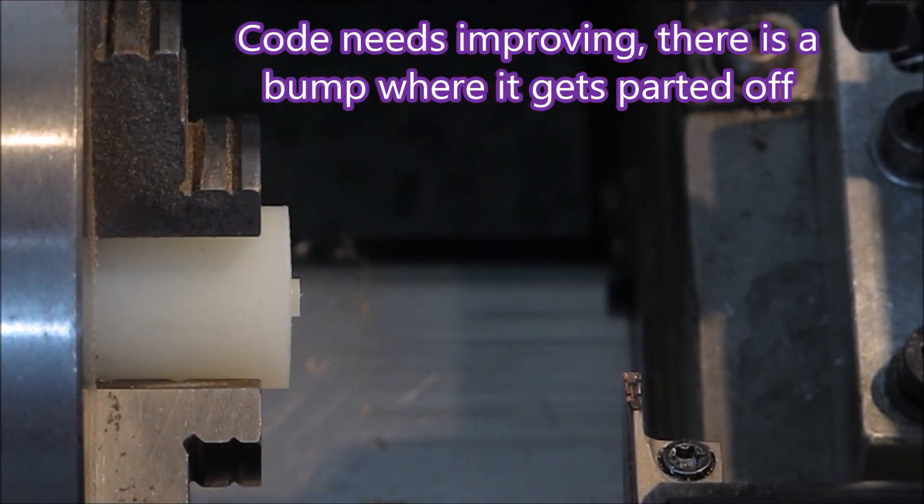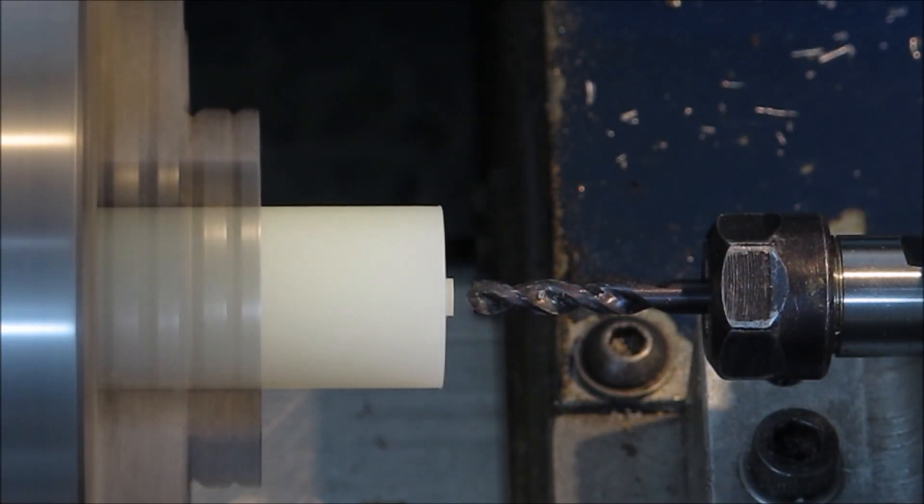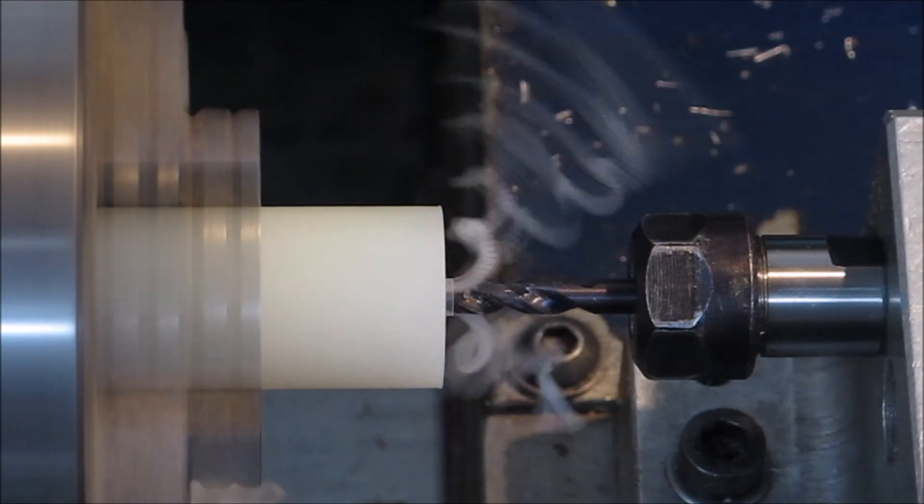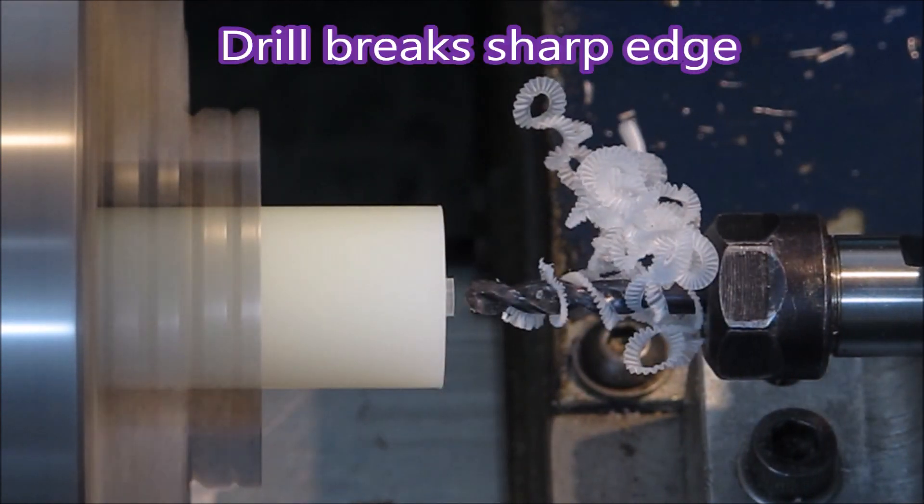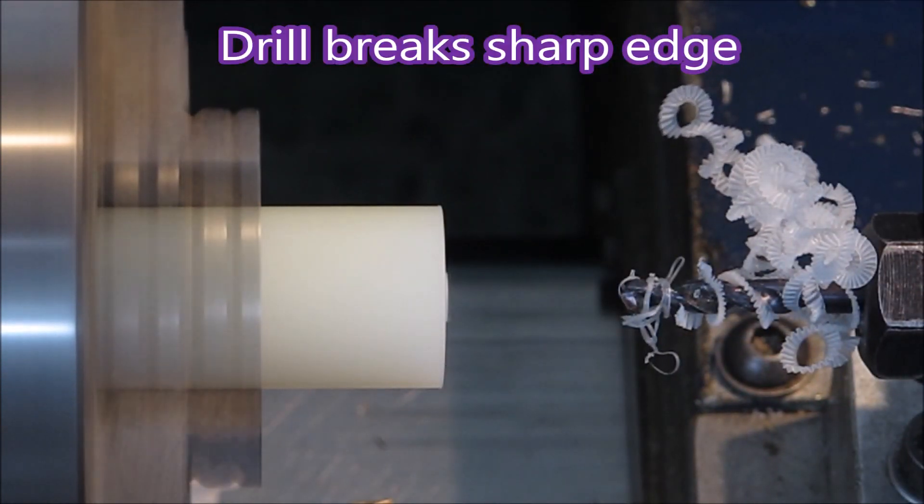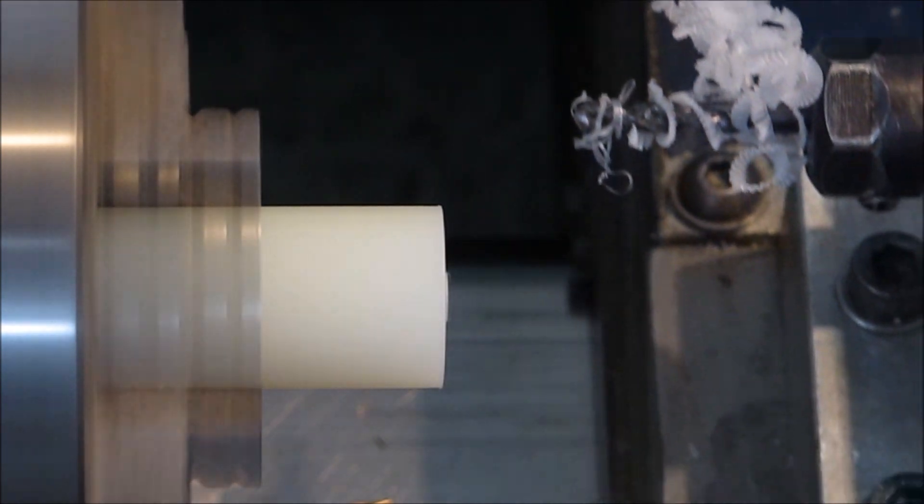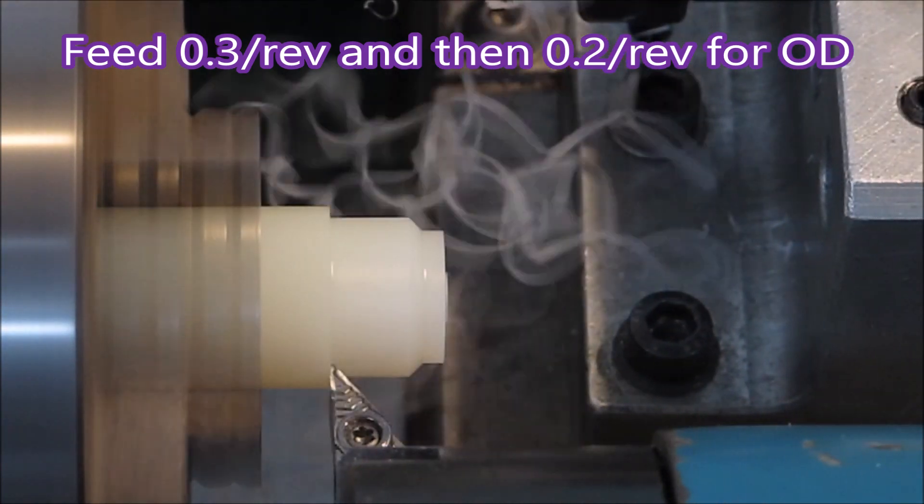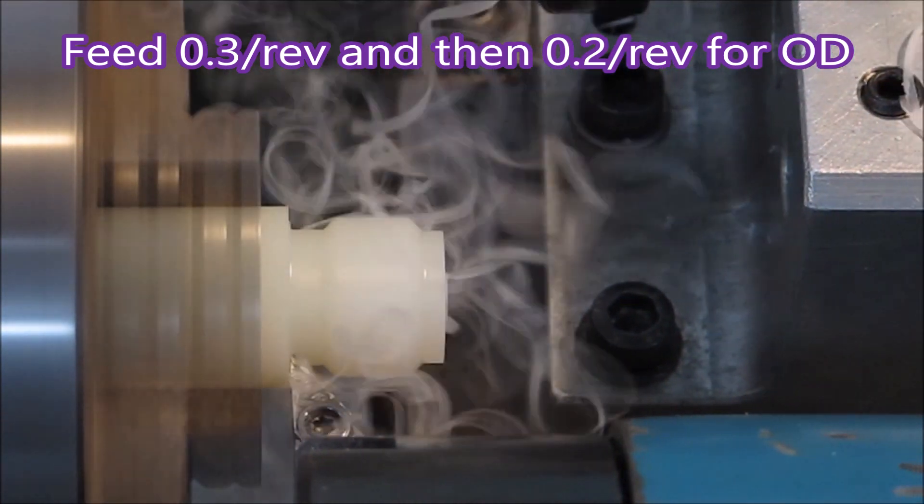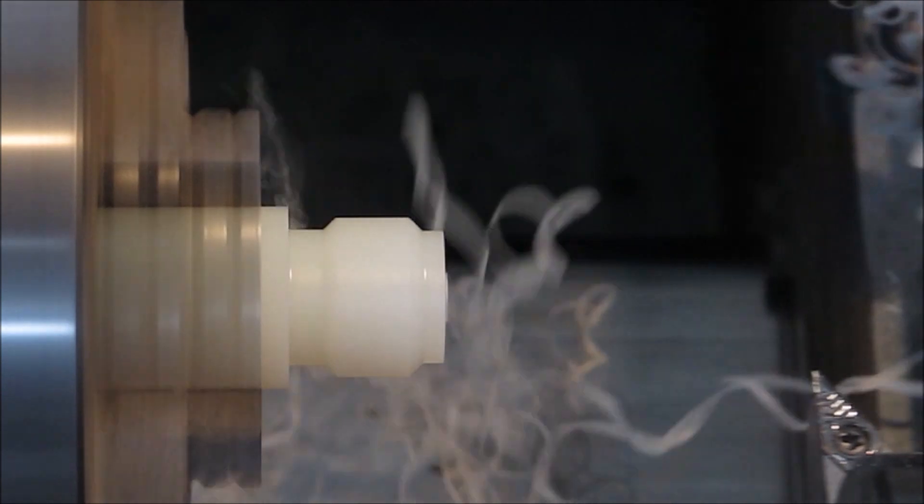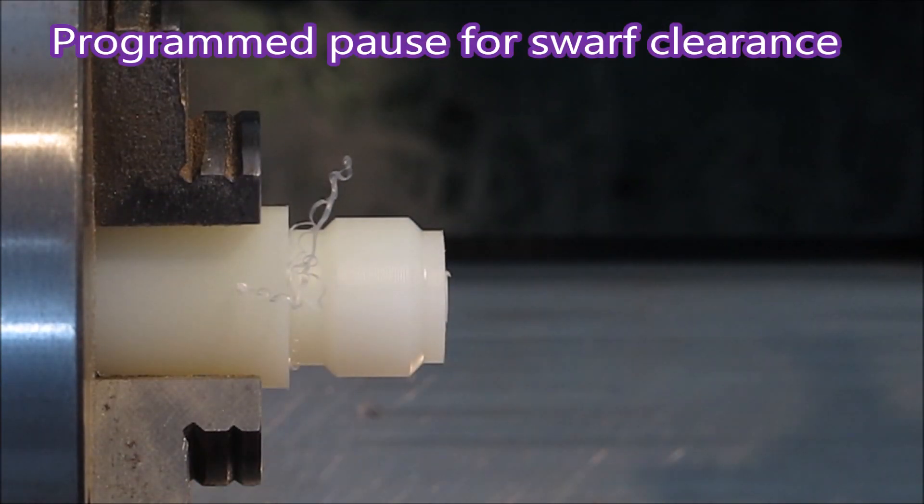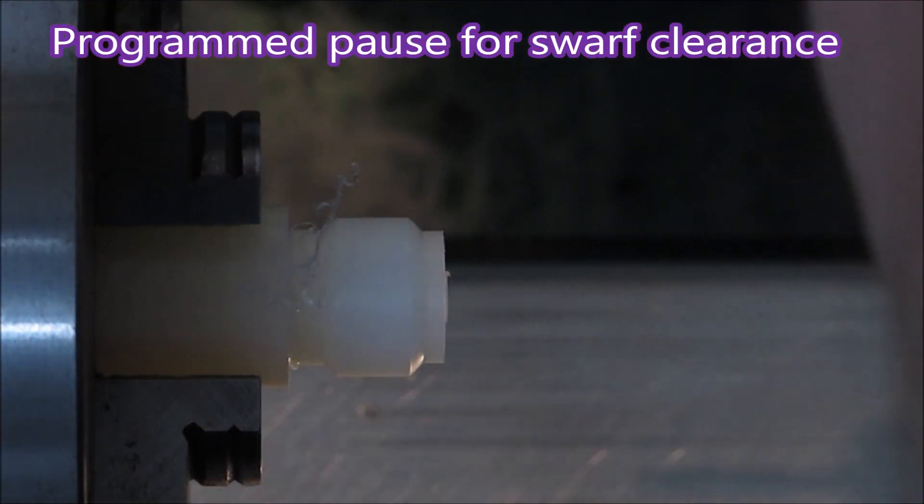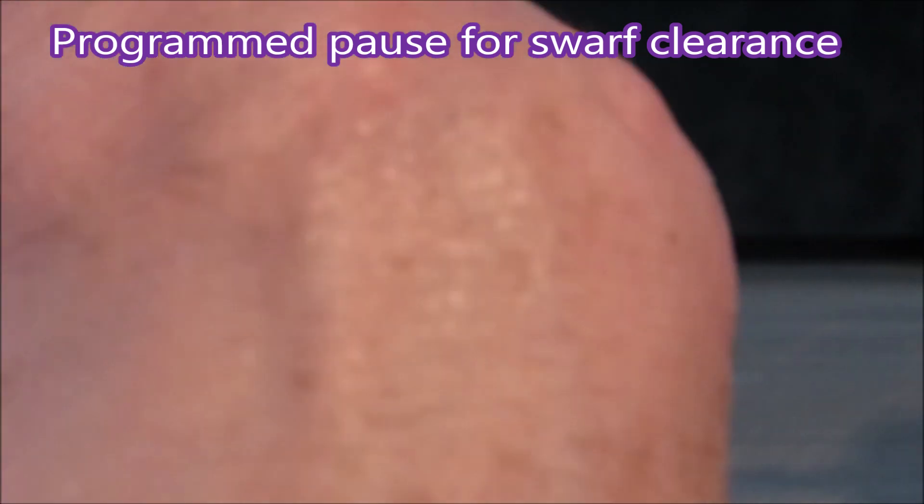There's a bit of a bump on the end of that spigot which will be reduced a bit in the next sample that we make. These parts were actually made a long time ago and I really can't remember what I did to get rid of the bump that I was getting on the end of each spigot. On the inside end it didn't occur on the outside end, but there was definitely a bump on the end towards the chuck.